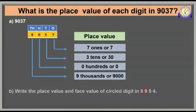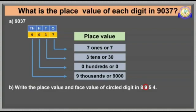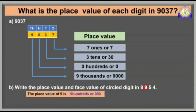In the second example, write the place value and face value of the circled digit in 8954. Here you need to write the place value and face value of only the circled digit, which is digit 9. The digit 9 is in the 100's place. Therefore, the place value of 9 is 900. The face value of 9 is 9 only.